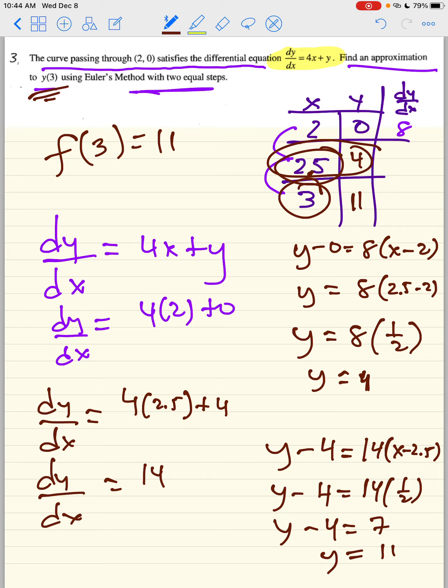And that's pretty much how you do it. You basically have to just do the equation of the tangent line, get an approximation, and then use that approximation as your new point and do it again. Let me know if you have any questions.